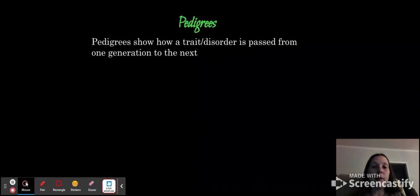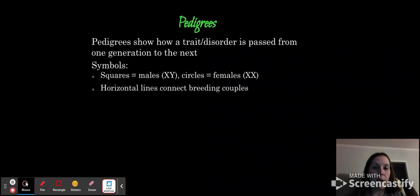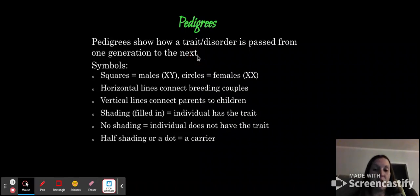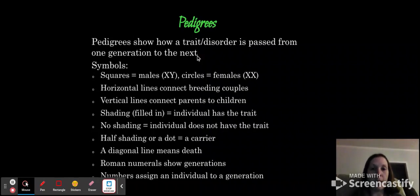So pedigrees will show you how a trait or disorder is passed from one generation to the next. So you can continue these with generations. You can do parents, children, grandchildren, and keep going from there. Remember, squares are males and circles are females. Horizontal lines connect breeding couples. Vertical lines connect parents to children. Shading means the individual has the trait. No shading means the individual does not have the trait. Half shading or a dot within means that they are a carrier. And then a diagonal line means death. Roman numerals will show generations and you tend to write those down the side of your pedigree. Numbers are assigned to individuals in a generation.